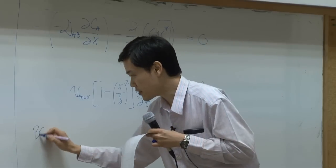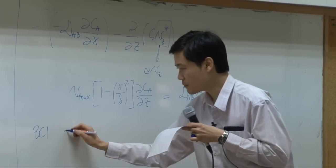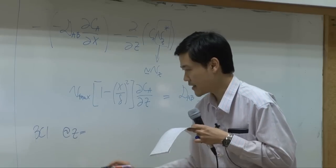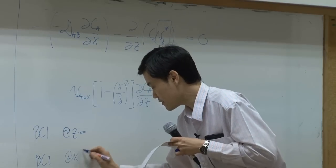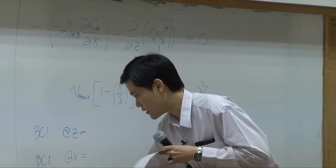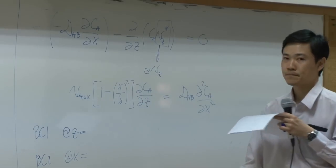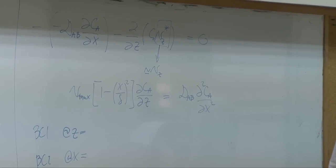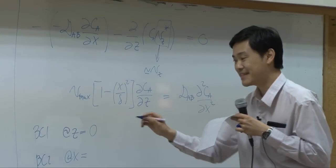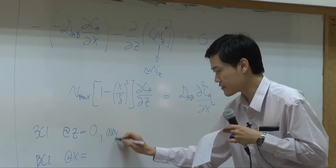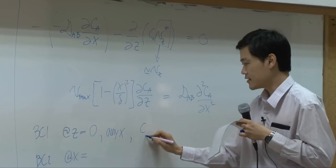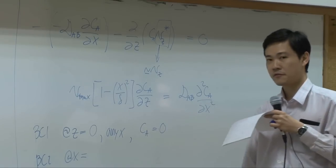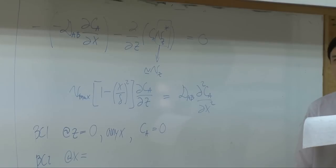So the list of boundary conditions is supposed to be at z equal to something and two of the boundaries regarding x. We know that at z equal to zero, that's fresh liquid B. So at z equal to zero, any x, CA is zero because we feed fresh pure B.